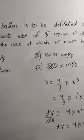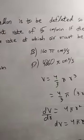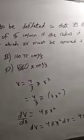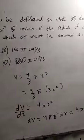A spherical balloon is to be deflated so that it decreases at a constant rate of 15 cm per minute. If the radius of the balloon is 9 cm, the rate at which air must be removed is: option A is 162